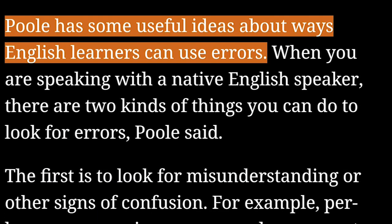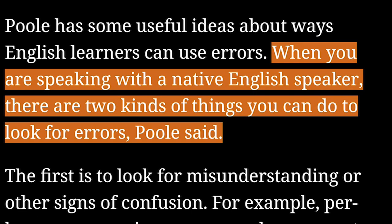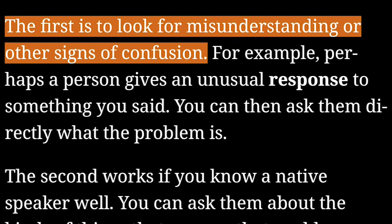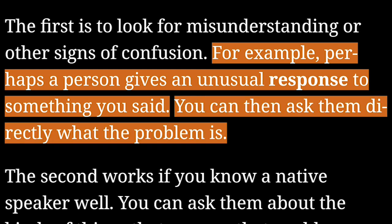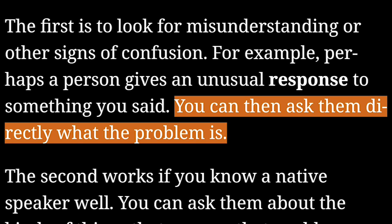Poole has some useful ideas about ways English learners can use errors. When you are speaking with a native English speaker, there are two kinds of things you can do to look for errors. The first is to look for misunderstanding or other signs of confusion. For example, perhaps a person gives an unusual response to something you said. You can then ask them directly what the problem is.